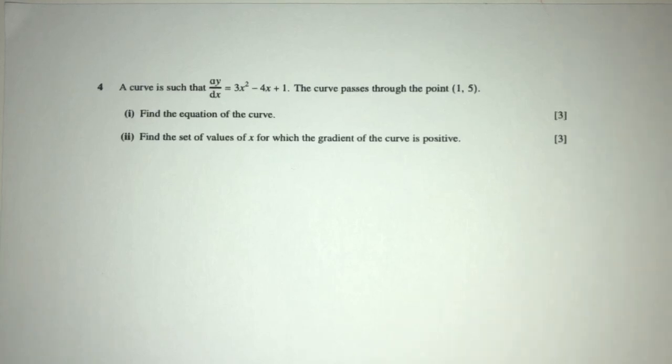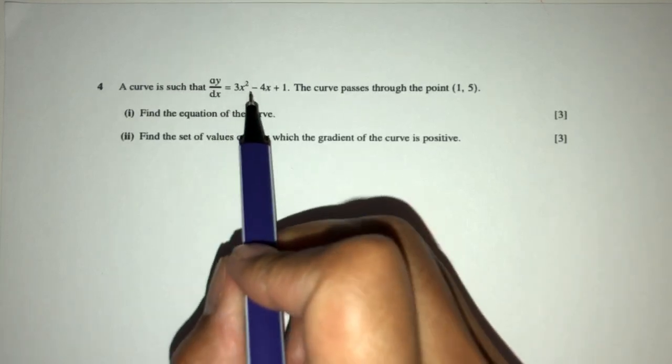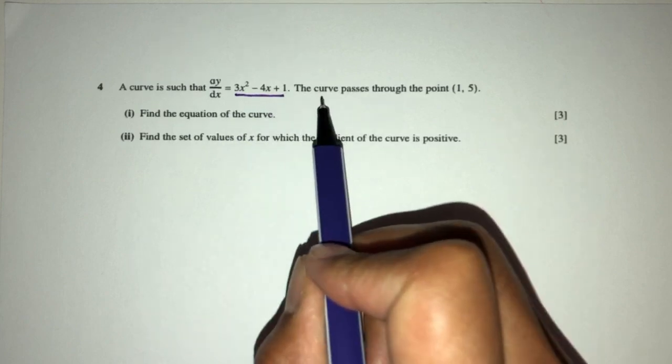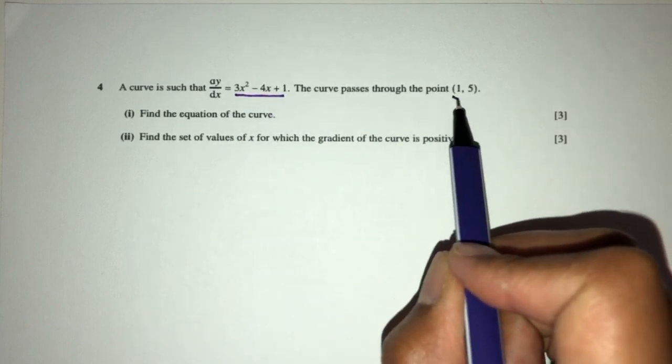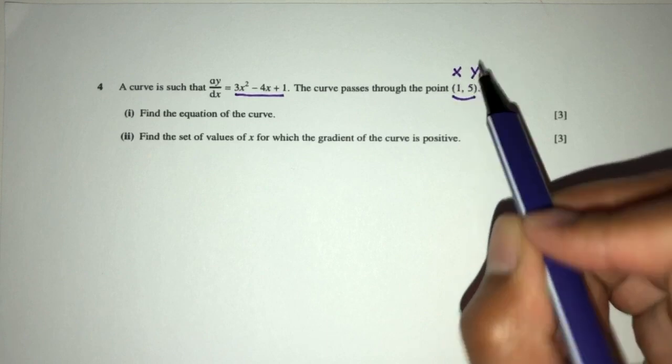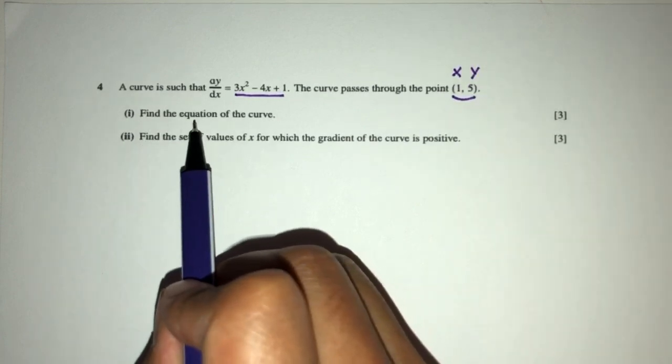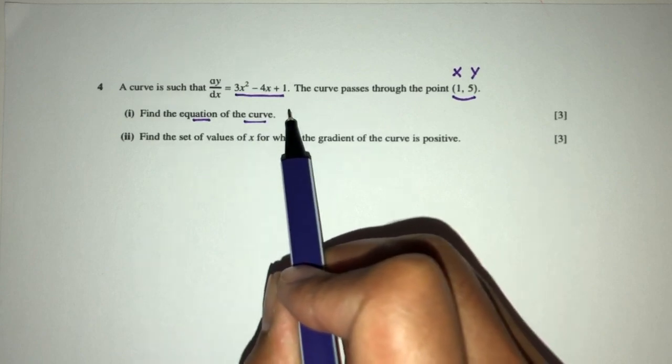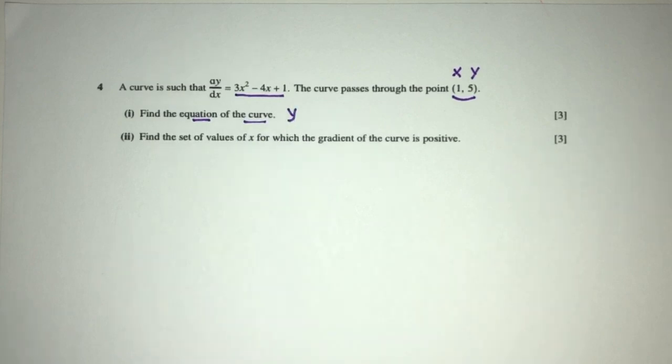Let's move on to the next question. A curve is such that dy by dx is given to you by this. The curve passes through the point (1,5). This is the passing point - this is my x value and my y value. Now we have to find the equation of a curve, so we have to find y for that curve. The equation of a curve is basically y.